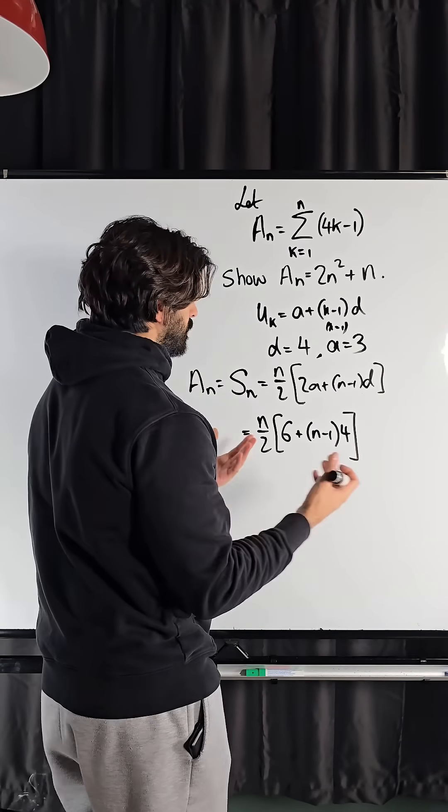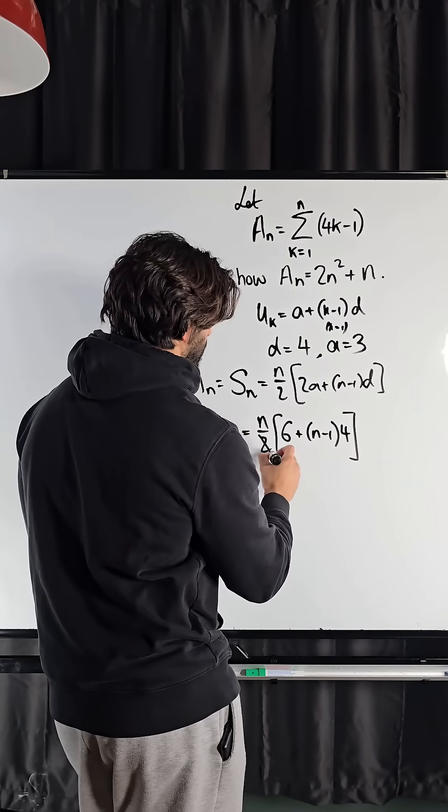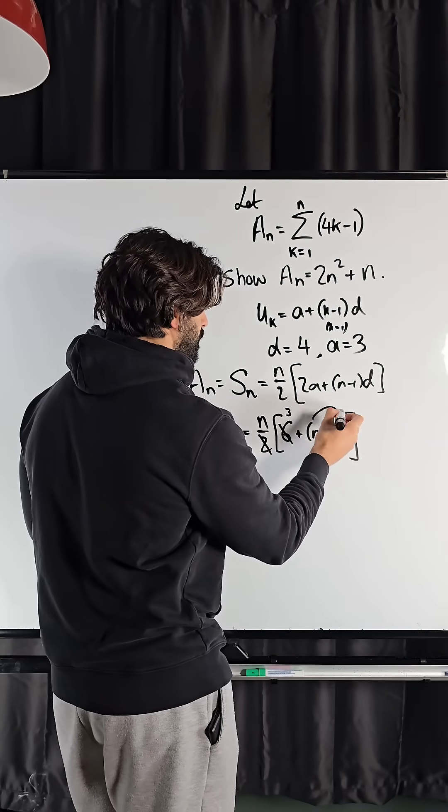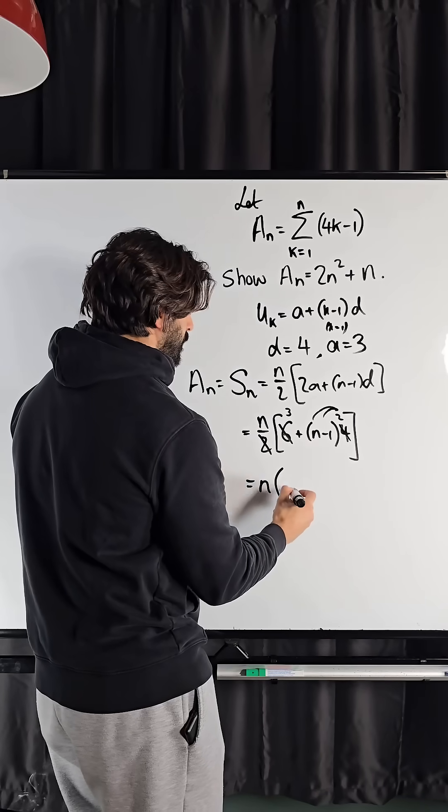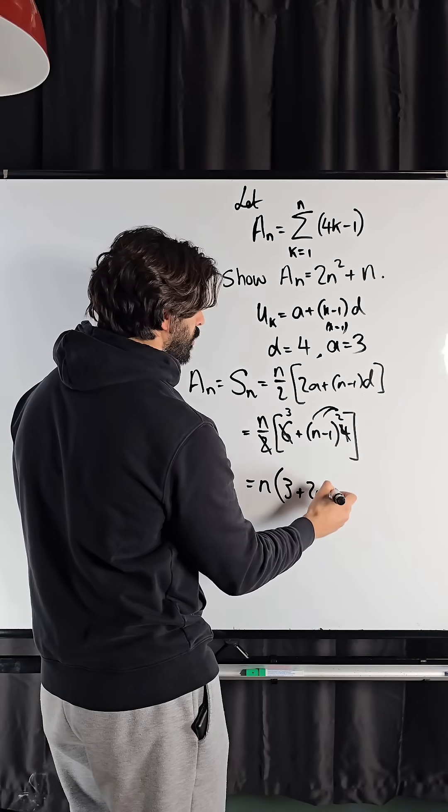You can multiply in the 2 now, or you could expand and simplify. I'm going to multiply in the 2. 2 cancels the 6 three times, cancel the 4 twice. Multiply that in. So you get n lots of 3 plus 2n minus 2.